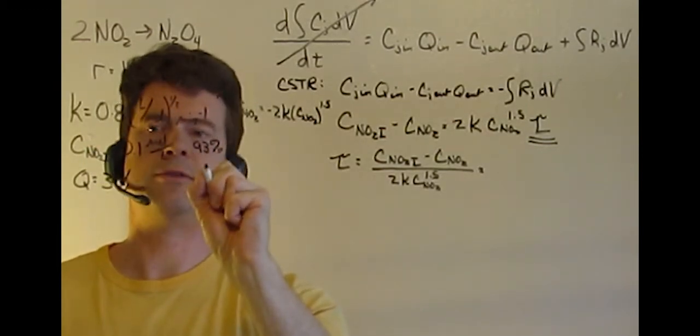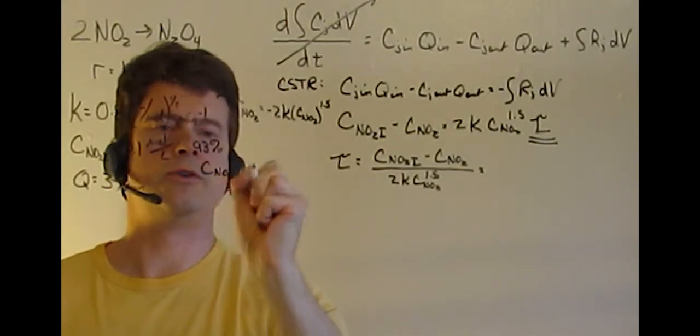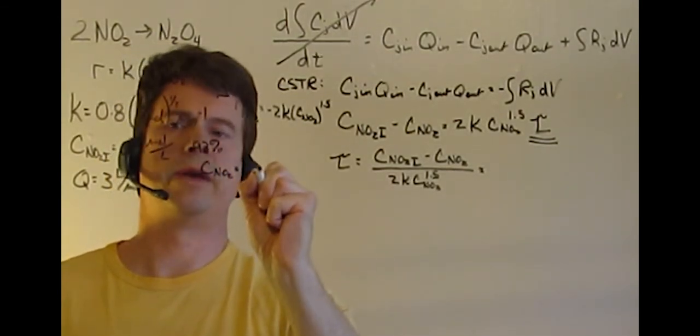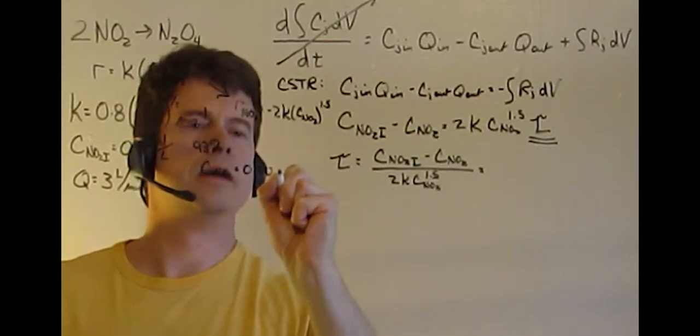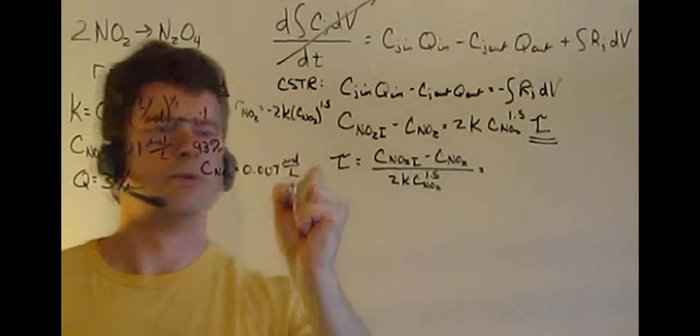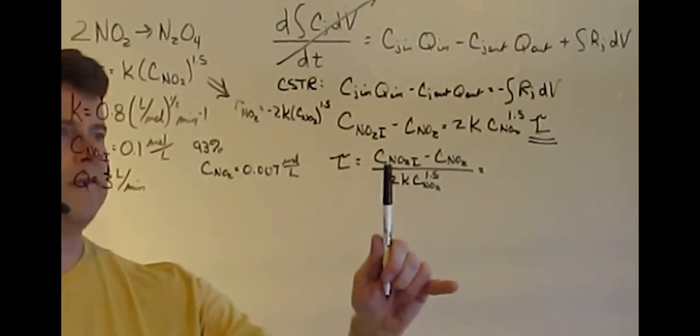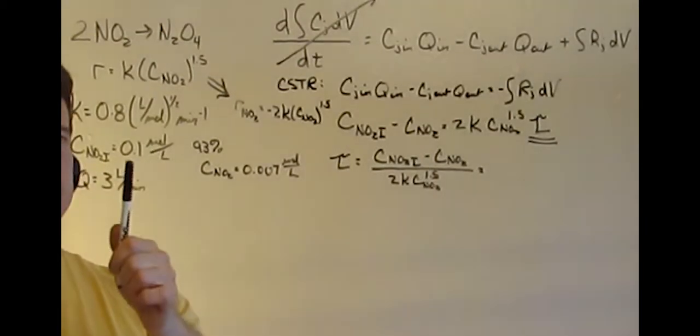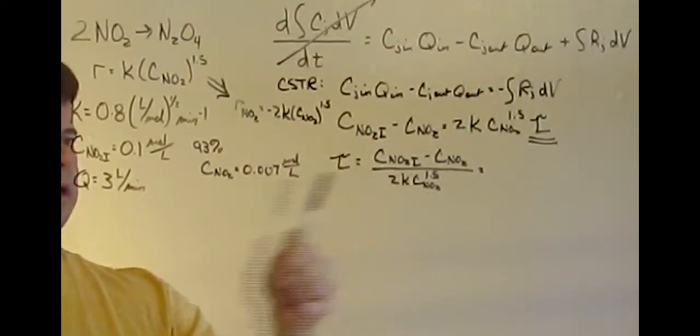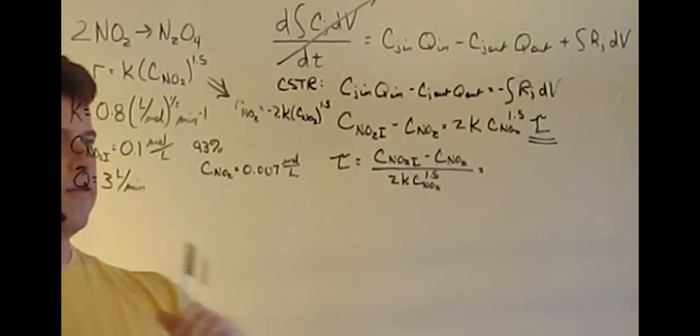7% times our initial, that gives us CNO2 equal to 0.007 moles per liter. So when we plug in the values, we've got our initial 0.1, we have 0.007 for both numerator and denominator, and we have our value for K.